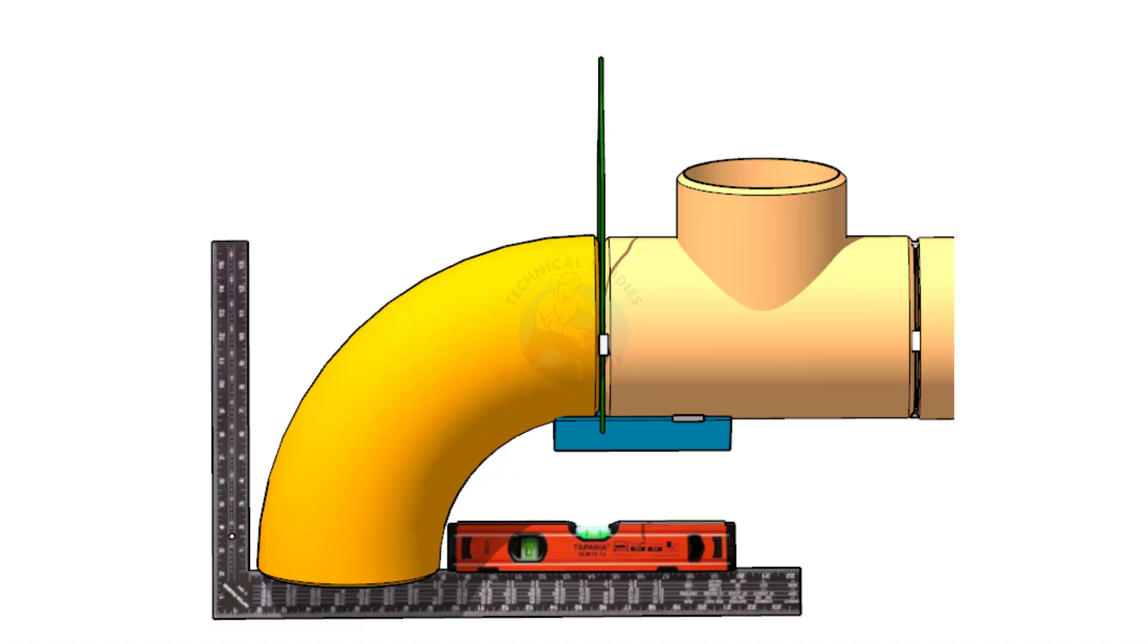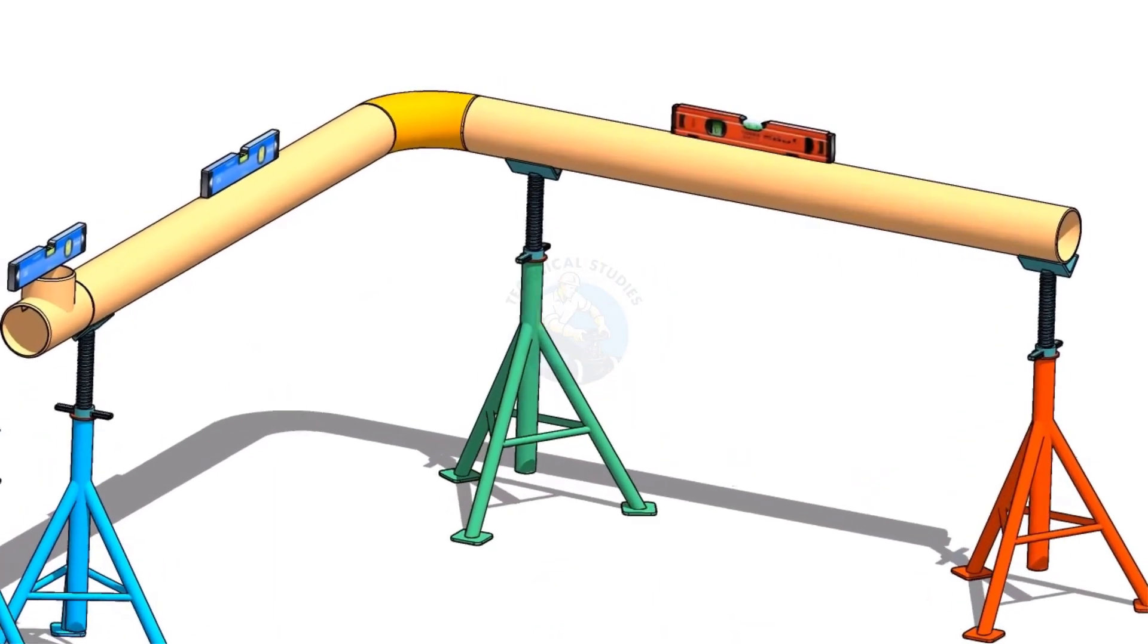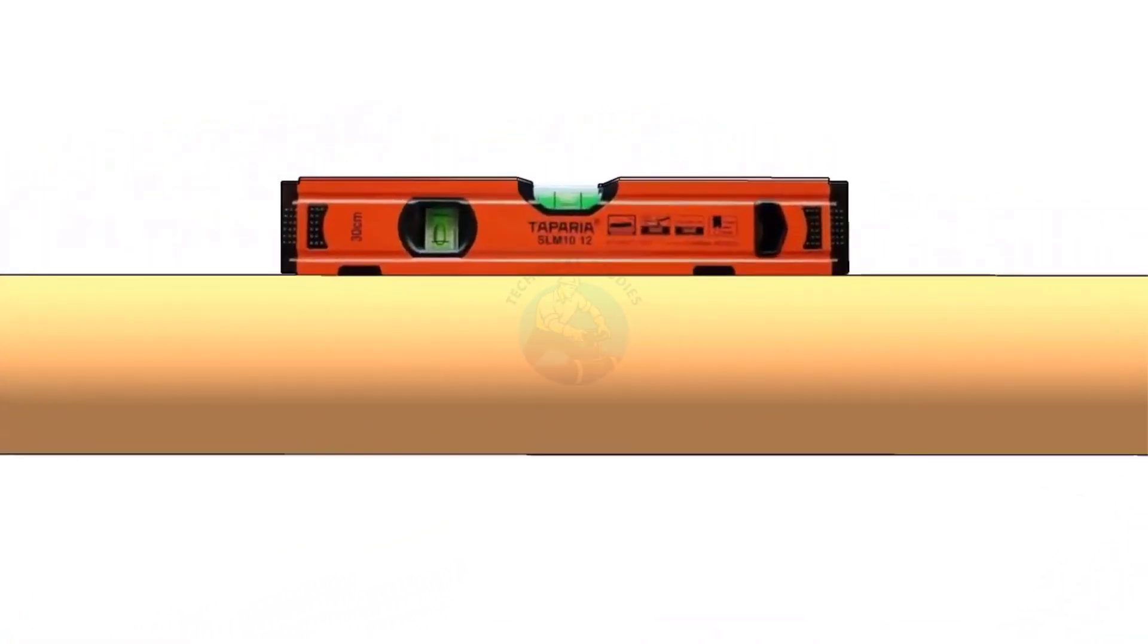In the first method we will fit up a 90 degree elbow to a fixed tee. Make sure the already fabricated spools dimension and level are acceptable. Mark the center lines of the tee and the elbow.